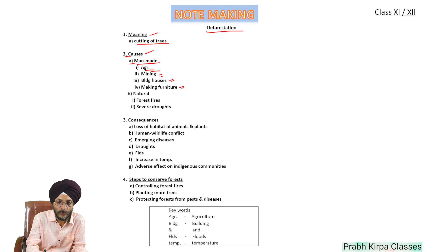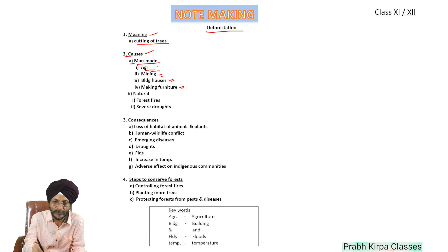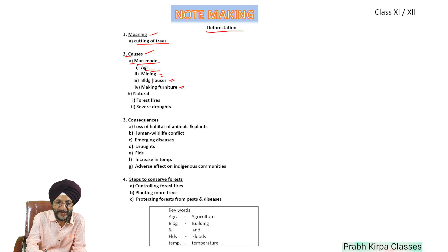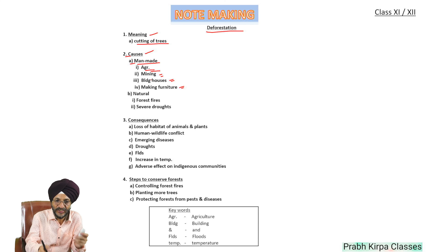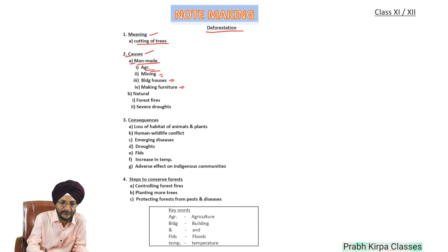Here we have used the abbreviation for agriculture: AGR. Here we have used an abbreviation for building — for 'building' we have used BLDG. Natural causes are forest fires and severe droughts.